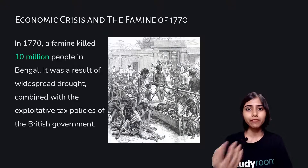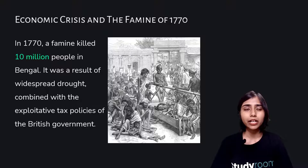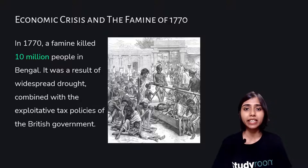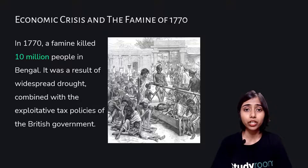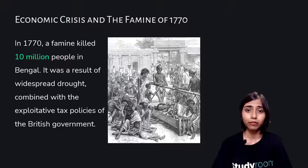Trying to portray themselves as majestic — as we saw in the picture of Robert Clive taking the Diwani — had two implications. First, they wanted to show that the Indian people were very willing to give them the Diwani. Secondly, when they went back home, they wanted to portray themselves as very able administrators, so their popularity in their own country would be greatly enhanced.